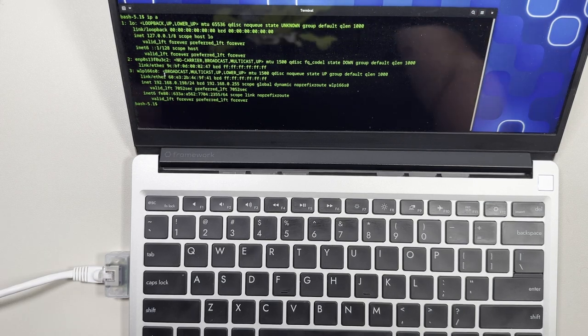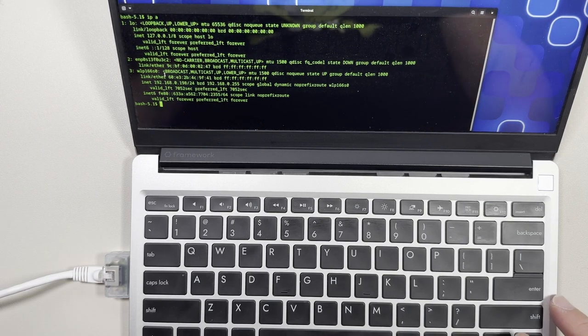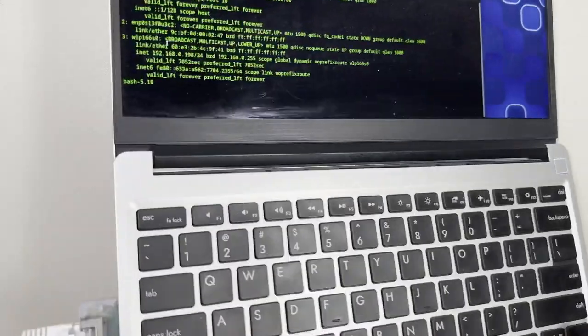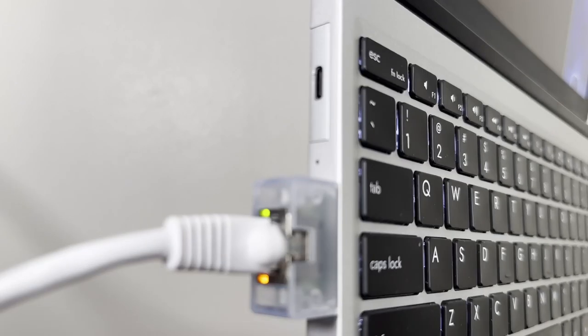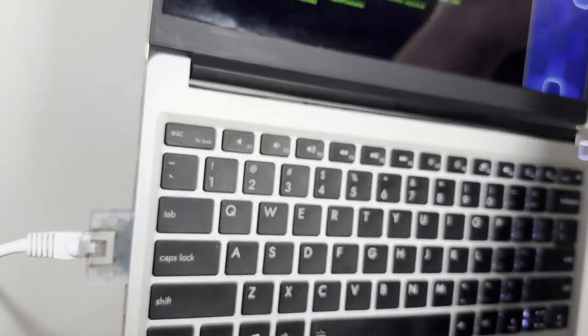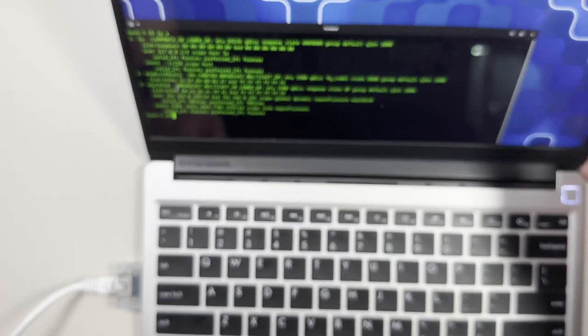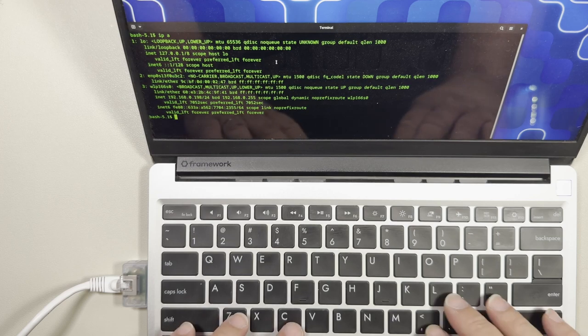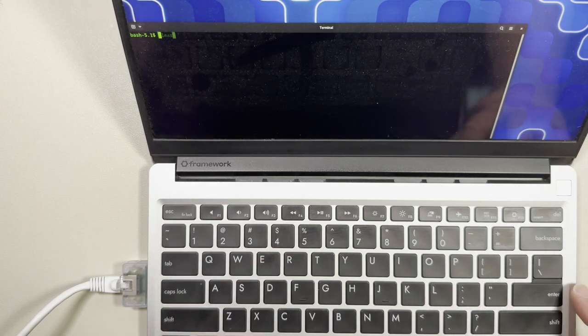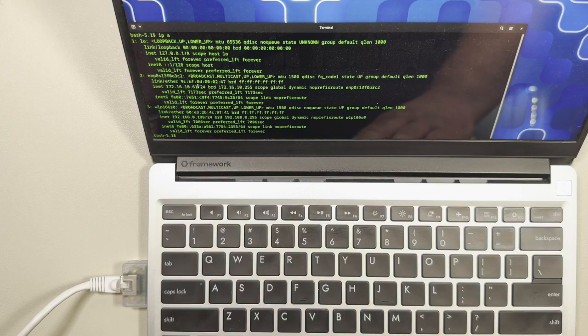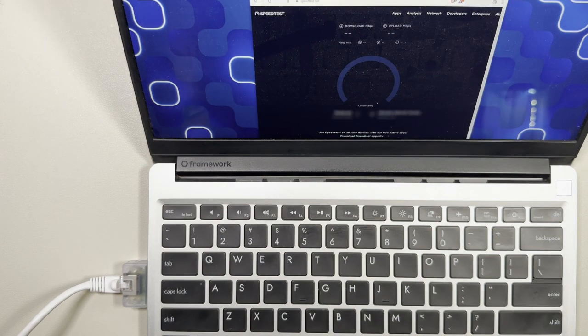Once we've plugged that in, it actually goes through and lights up on the end. You have working LEDs for both the orange and the green next to it, which is great. You actually have indicators that the thing is working correctly. Let's go ahead and do an IP space A or an IPA, which was also ifconfig in the past.